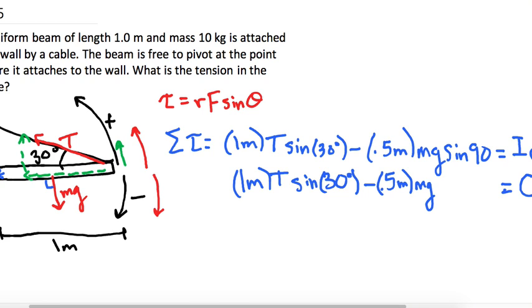So if I move 0.5 times mg over, we get 1 times T is the same thing as T. So we get T times the sine of 30 is equal to 0.5 times mg.